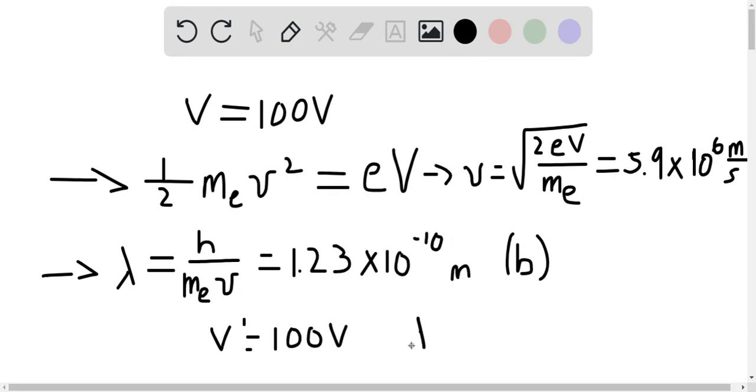What we can find here is that the wavelength, lambda prime, is going to be proportional to 1 over the square root of V prime.